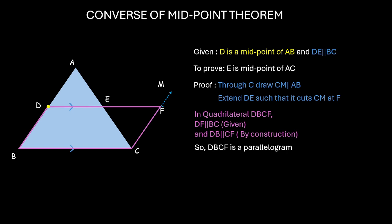Now, if DBCF is a parallelogram, that means DB is equal to CF, the opposite sides of a parallelogram, right? But, DB is already equal to AD, since D is the midpoint. So, this gives us AD equal to CF.